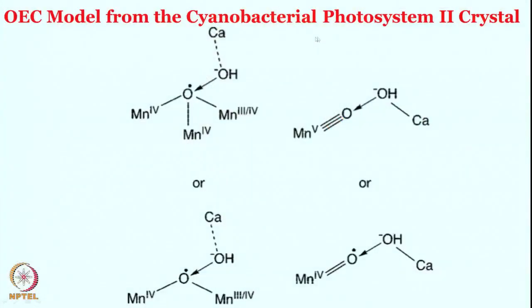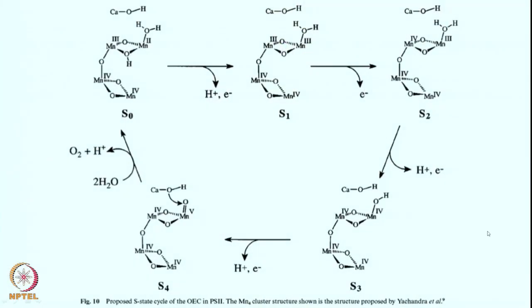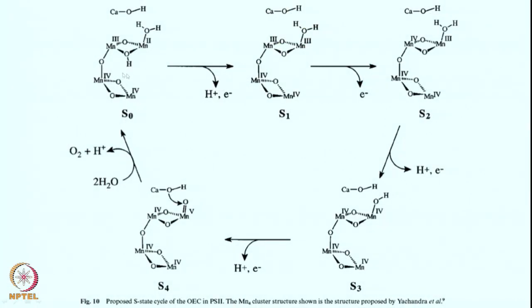This is the model from the cyanobacterial photosystem II crystal structure — the crystal structure we have seen in the Science paper. Many different studies are known; this is one by Yachandra et al. The proposal is that part of the 4-manganese calcium structure remains intact throughout the catalytic cycle, and only 2 manganese centers vary their oxidation state, and therefore they are involved in the oxygen-oxygen bond formation process.